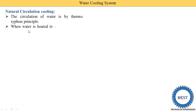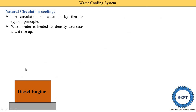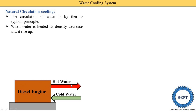What is the thermosiphon principle? When water is heated, its density decreases and the low-density water starts moving in the upward direction — this is called rise up. So hot water rises up inside the water jacket, and cool water starts moving in the downward direction due to the density difference. In this diesel engine the water jacket is provided. Cold water is supplied from the lower side, it starts to absorb heat in the water jacket, its temperature increases and its density decreases. Due to low density the water starts moving upward, and the hot water exits the engine. Whether this is an open or closed system determines where the hot water is supplied next.